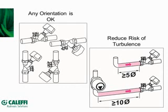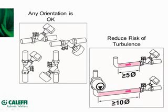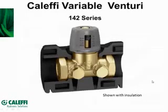A common question is: what orientation can these balancing valves be installed in? There are really no limitations — upside down, vertical, or horizontal pipe, it doesn't make any difference. However, there is some sensitivity to flow rate measurement as a function of turbulence. To minimize turbulence, keep pipe diameters from elbows greater than or equal to five pipe diameters. If the elbow is preceded by a pump, double that to 10 pipe diameters, since the pump discharge always creates vortex action.